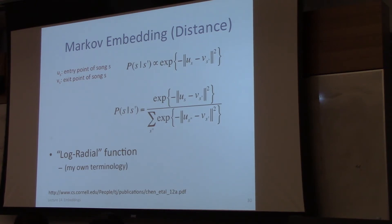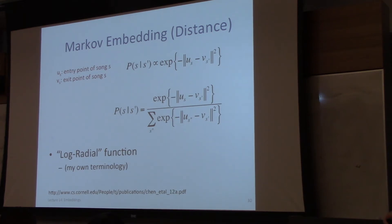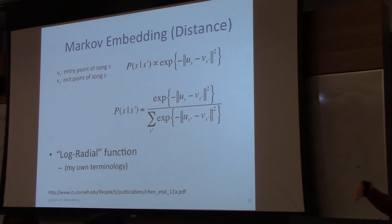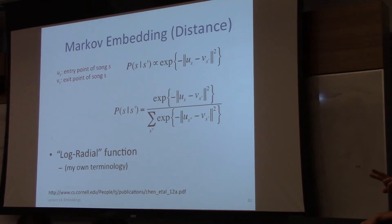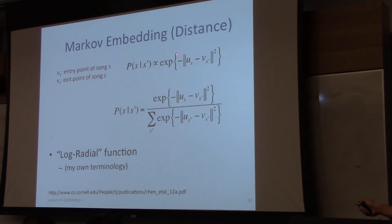If our training data is a sequence of songs, we want to model the transition probability assuming Markovian. The main thing we want to model is: given that we just played song S prime, what is the distribution of the next song? We do so by hypothesizing two parameter vectors for each song — an exit point and an entry point. When we finish playing song S prime, we look at its exit point in the embedding, find all songs whose entry points are close to it, and pick one that's close.